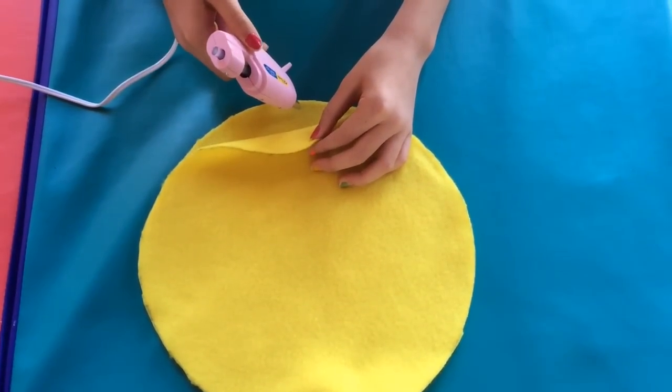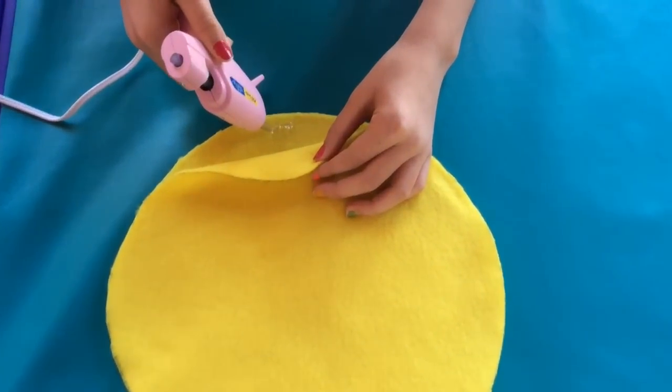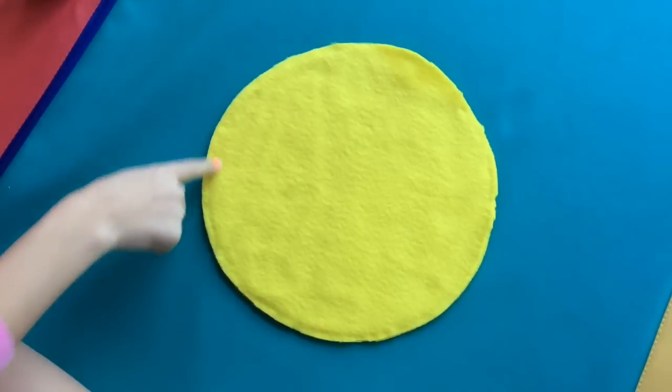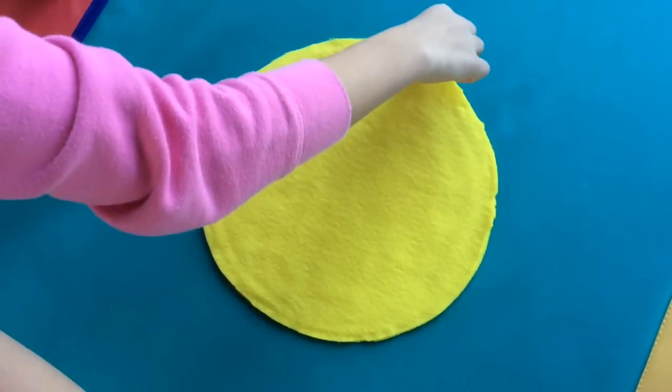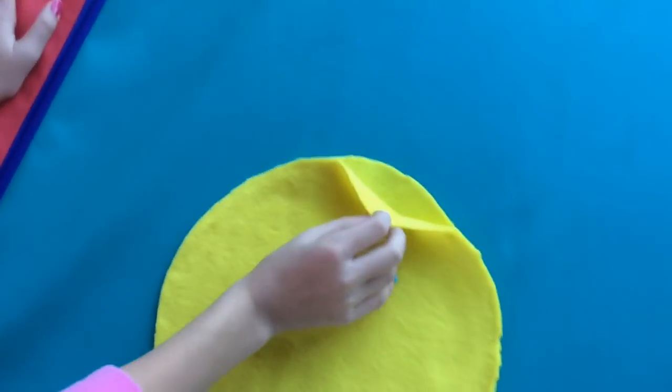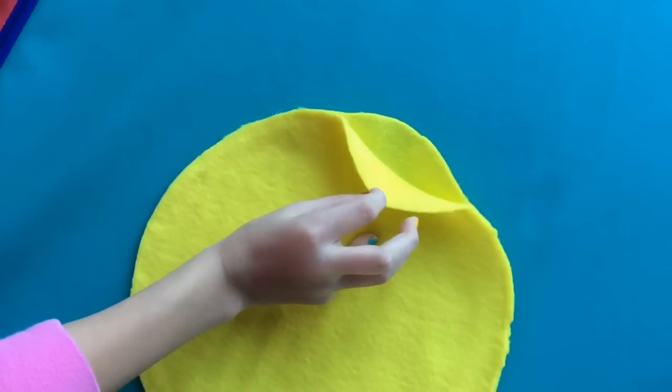Then you're going to take your hot glue gun and you're going to go around the whole entire emoji. But you are going to leave a little hole. You are going to glue the outside part, but you're going to leave a lot of space so you can put your hand in.